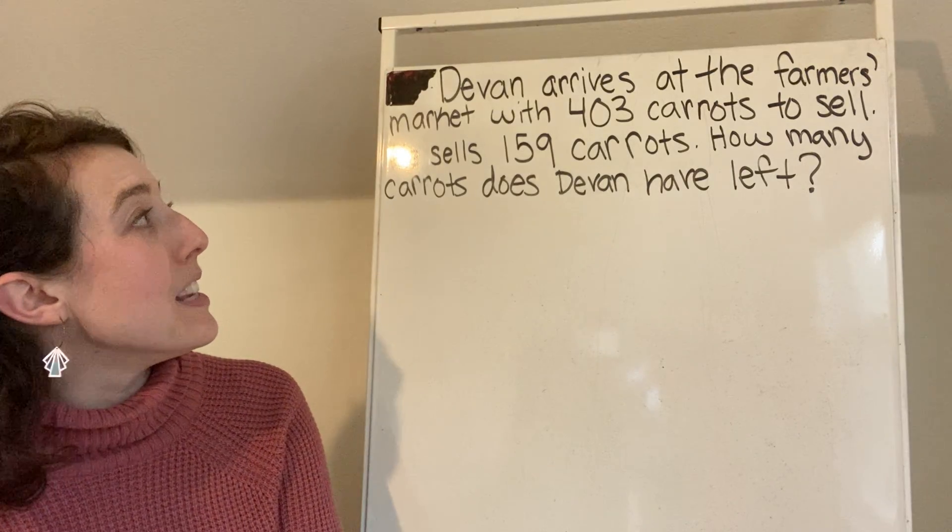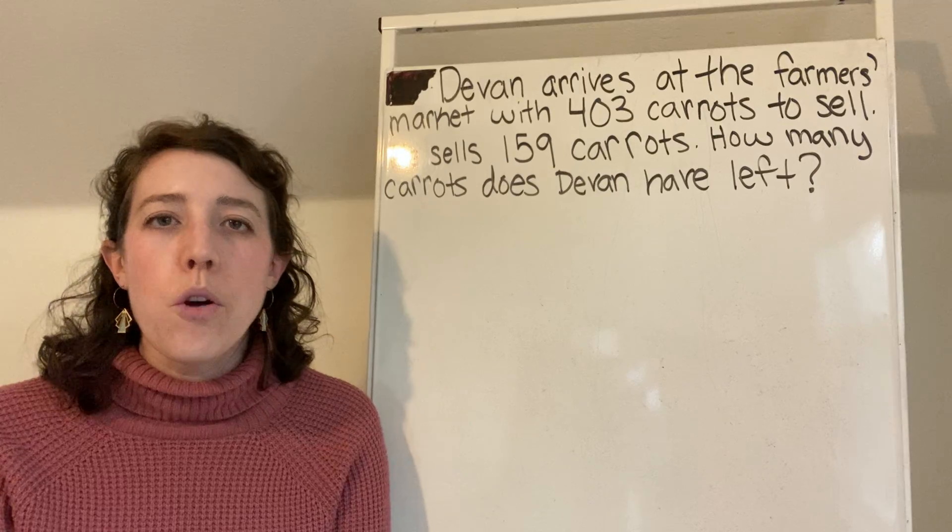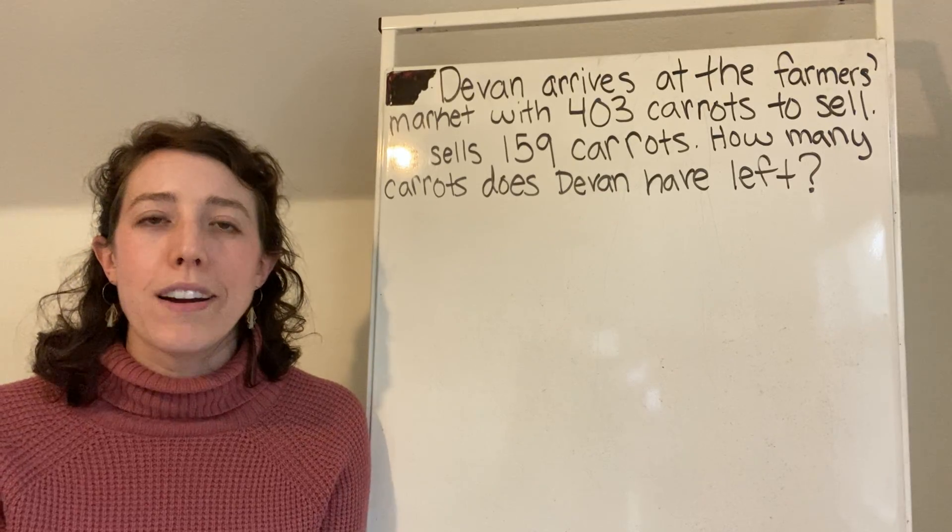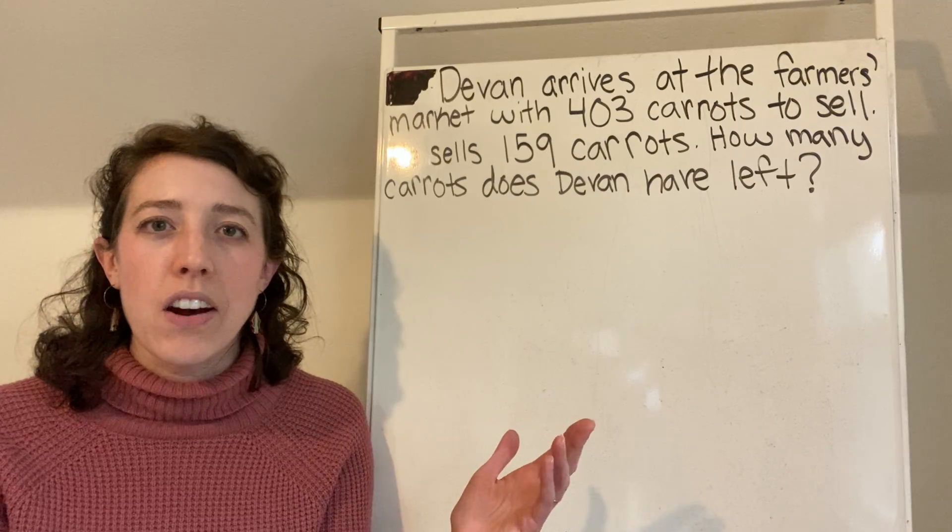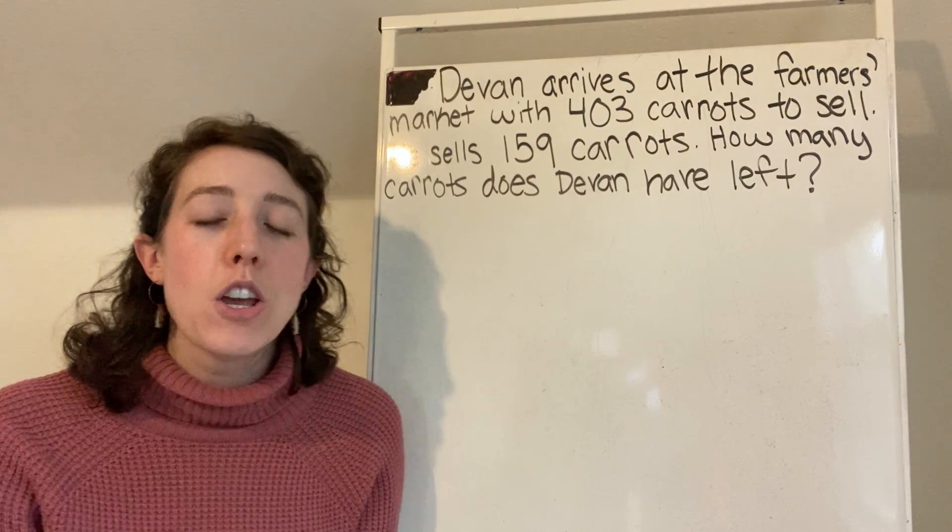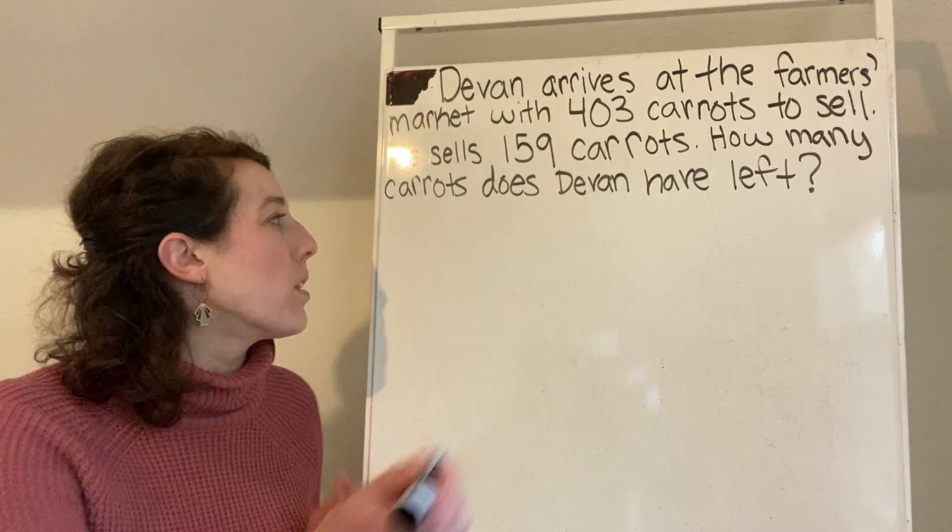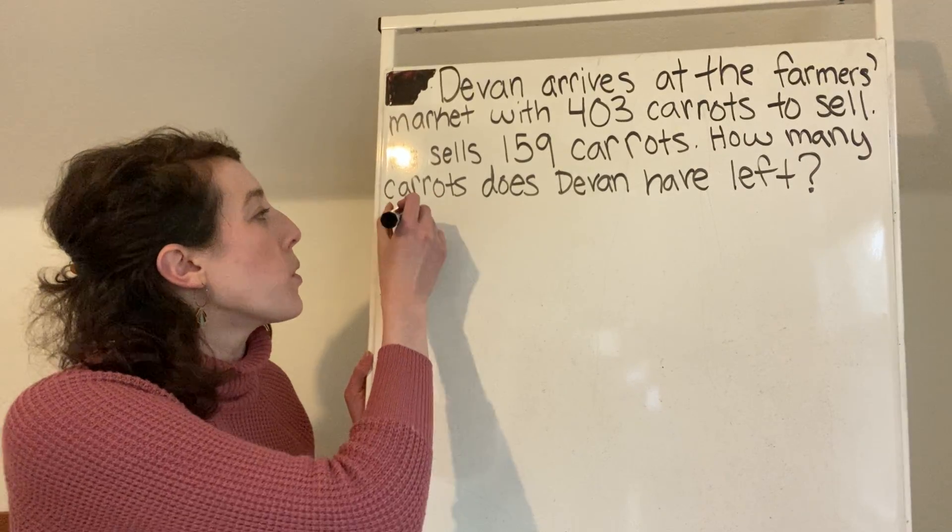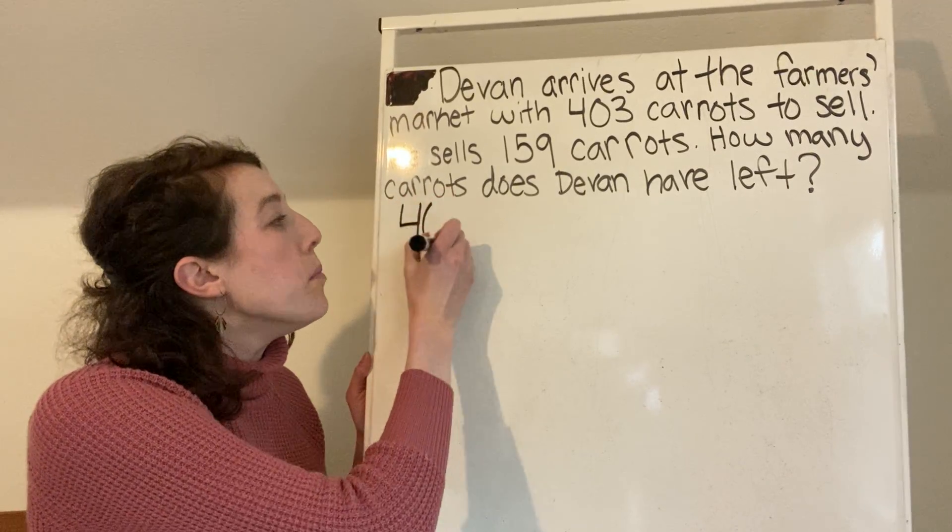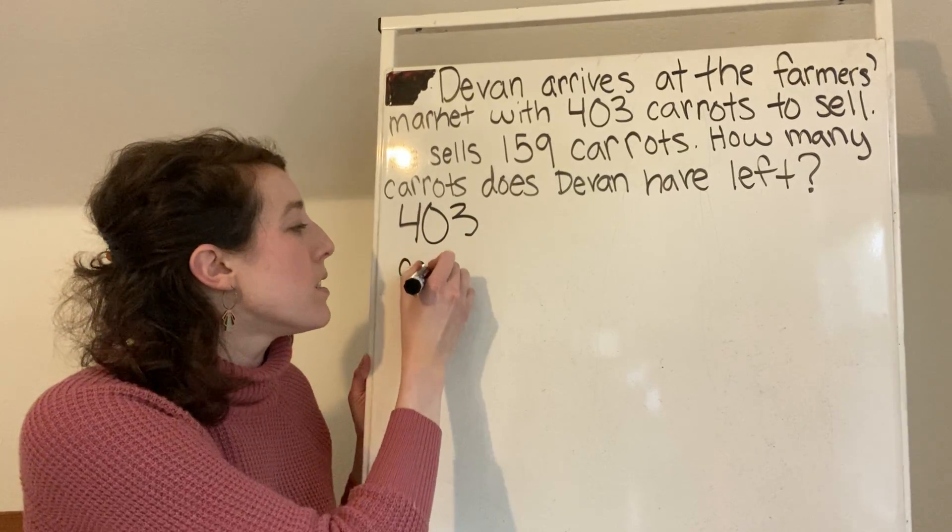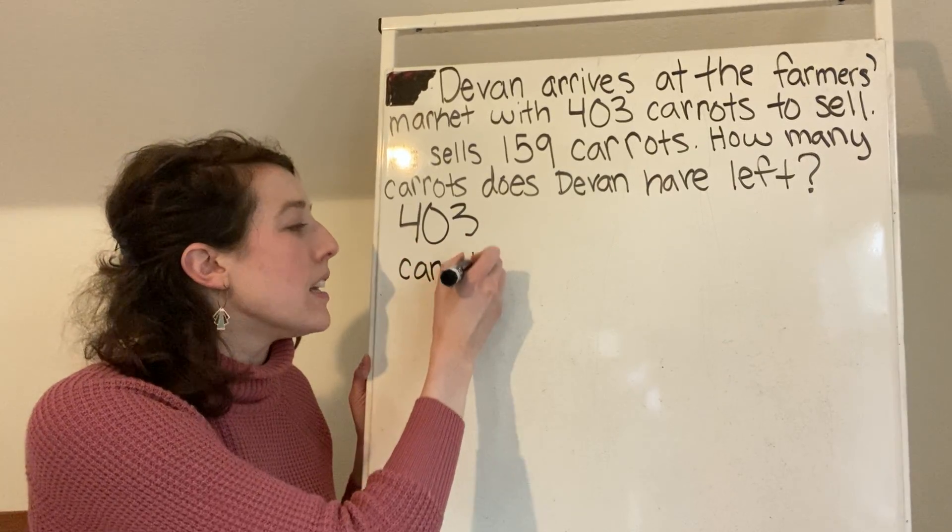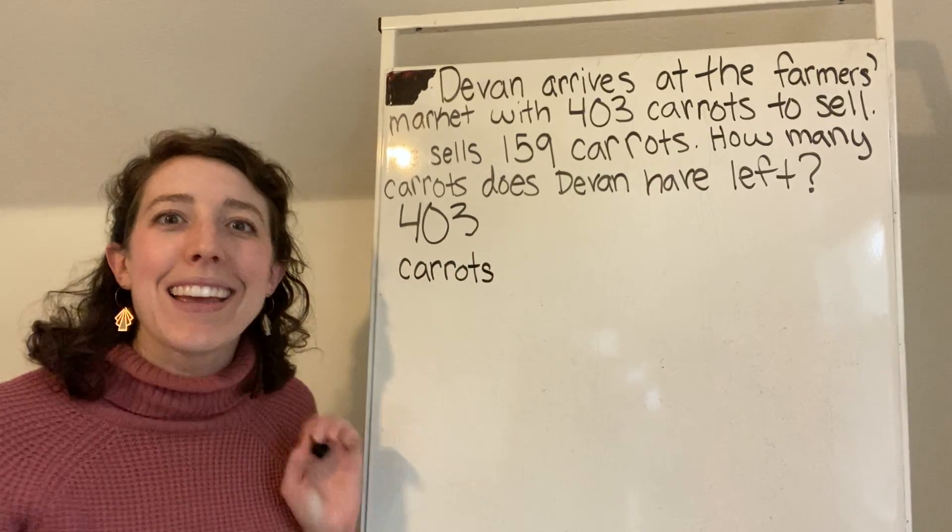So our first sentence says, Devin arrives at the farmers market with 403 carrots to sell. So I'm going to write the number 403. And beneath it, I'm going to write the word carrots. Because that is what Devin has in his story.